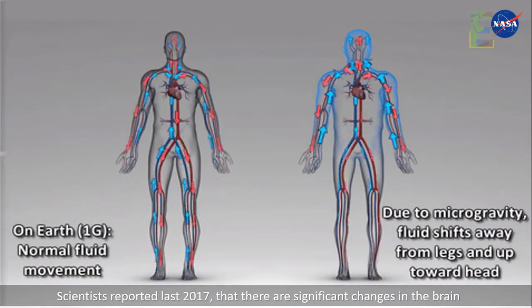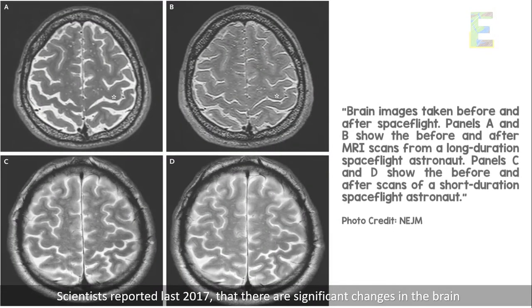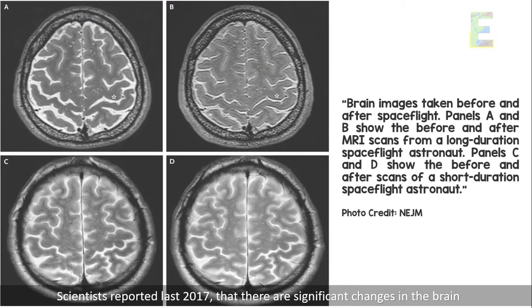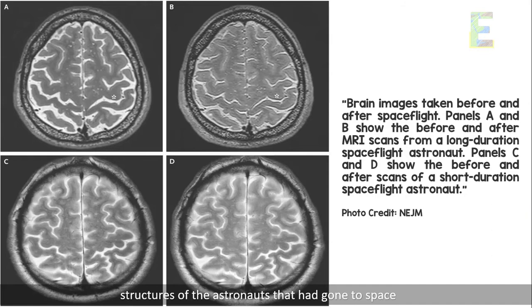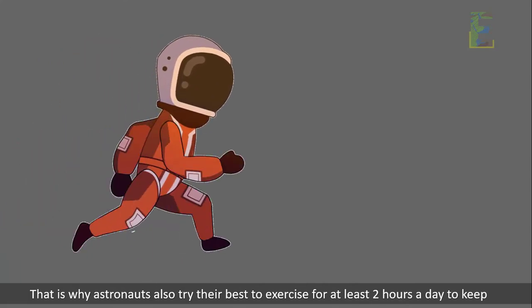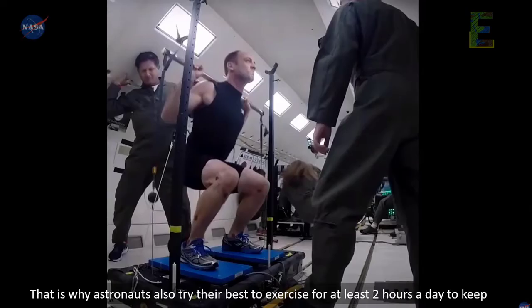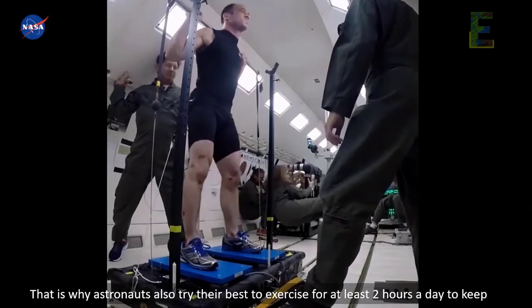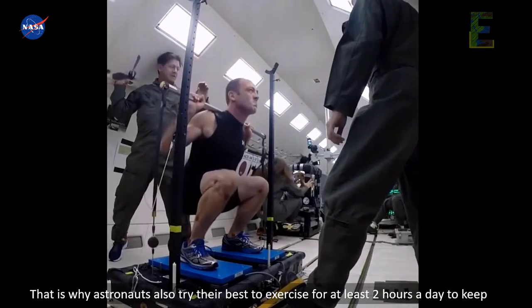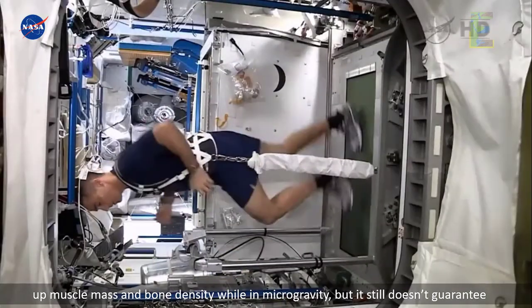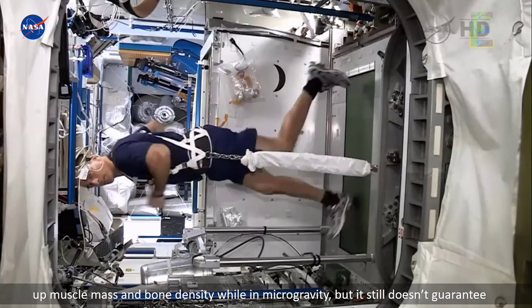Scientists reported last 2017 that there are significant changes in the brain structures of the astronauts that had gone to space. That is why astronauts also try their best to exercise for at least two hours a day to keep up muscle mass and bone density while in microgravity.